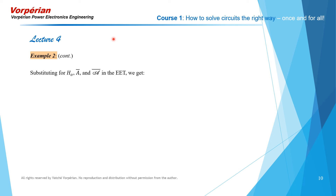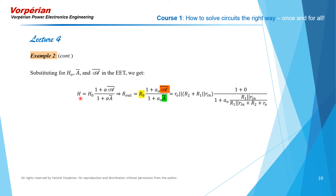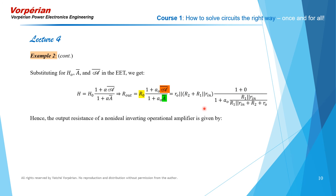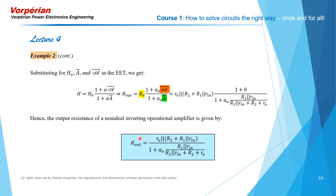We now substitute these three independent calculations into the extra element theorem applied to output resistance. H equals H0 — the value with alpha equal to zero — followed by the correction factor. That means R_out equals R0 times the quantity 1 plus A0 over script ā divided by 1 plus A0 times ā. When we perform that substitution, we obtain the expression for the output resistance of the non-ideal op-amp circuit in the presence of these non-idealities.